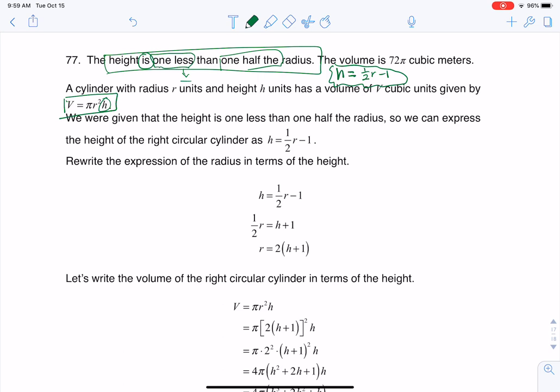And I could substitute that in right there if I wanted to. But I'm going to opt to just do it slightly different. Because there's this fraction of one half here, I'm going to try and solve for the radius just so I can get rid of fractions.